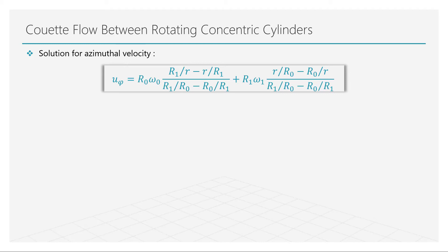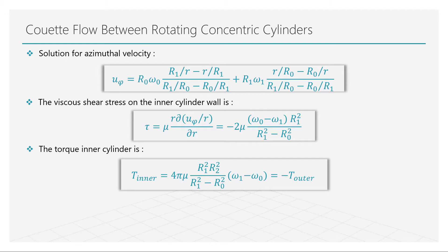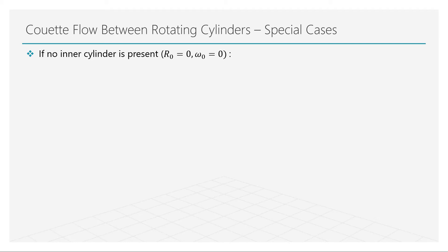Since the shear stress is dependent on the velocity gradients, we can obtain an equation that dictates the distribution of shear stress in the fluid flow from the known velocities. Furthermore, the torque force on the inner cylinder per unit length is obtained using the following relation. The torque on the outer cylinder is just the negative value of the same relation. Today, devices such as rotational viscometers, which measure the viscosity of a fluid, make use of this torque equation to calculate viscosity.